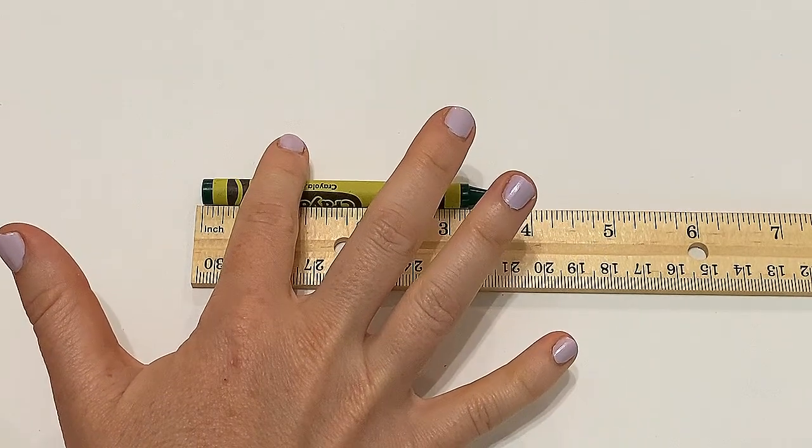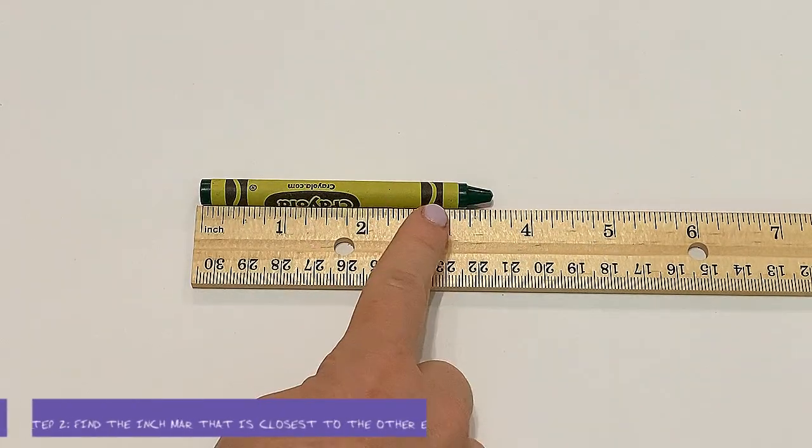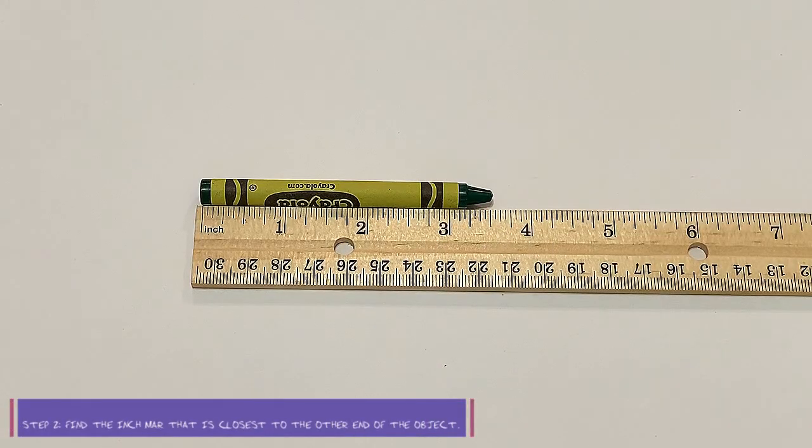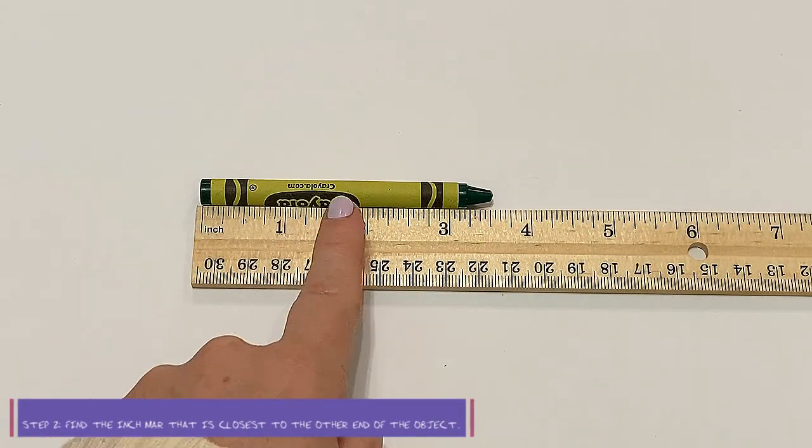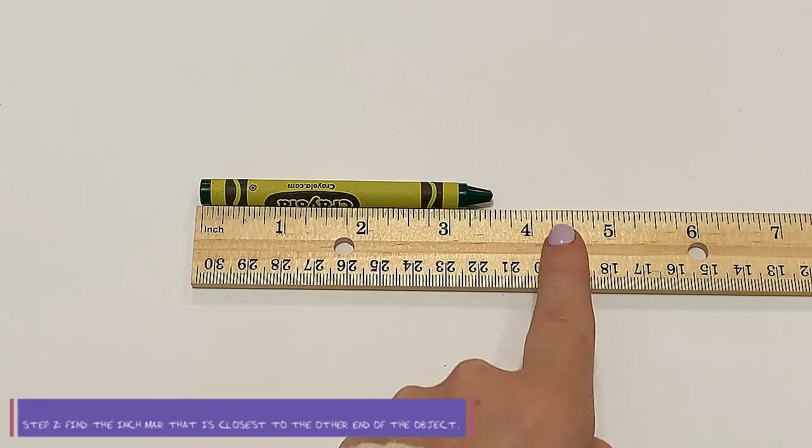So I want to make sure I'm lining that inch ruler up with the very end and I look here and I look very carefully and I see that I have one, two, three, four inches.